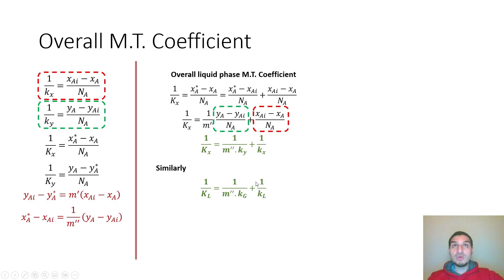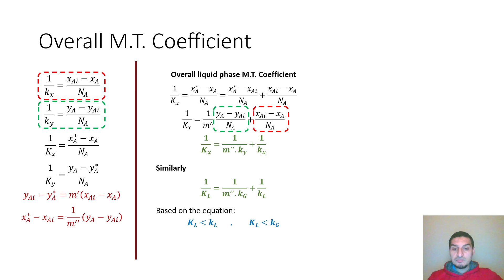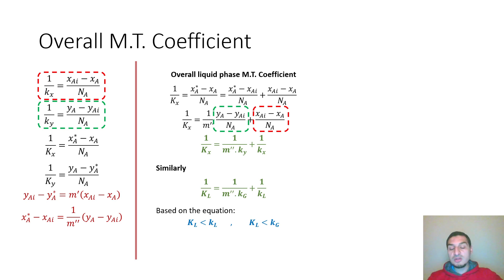Based on these equations, we can clearly see that the overall mass transfer coefficient must always be smaller than the individual mass transfer coefficients. This is a very important piece of information: the overall coefficient can never be larger than any individual coefficient, because mathematically this combined term can never exceed either of the two individual terms.